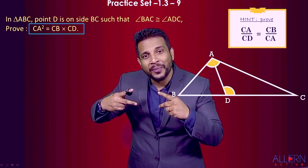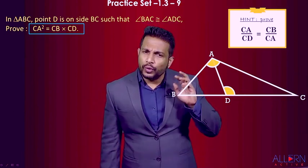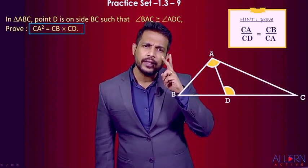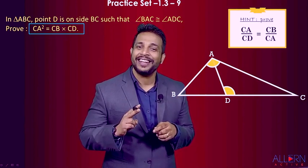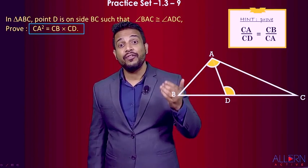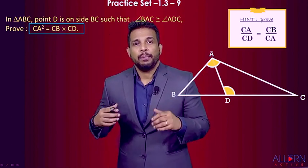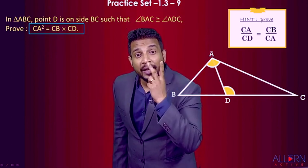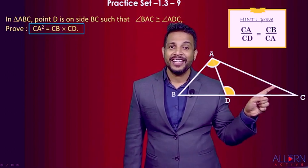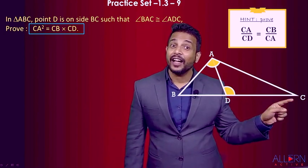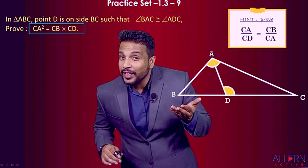So we want two ratios to be equal, and two ratios are equal when two triangles are similar. We need to identify which two triangles to use. In this figure there are three triangles — two smaller ones and the bigger one. Since we want CA squared, that means we need CA appearing twice. So consider two triangles which both contain CA: the bigger triangle ABC and the smaller triangle CAD.